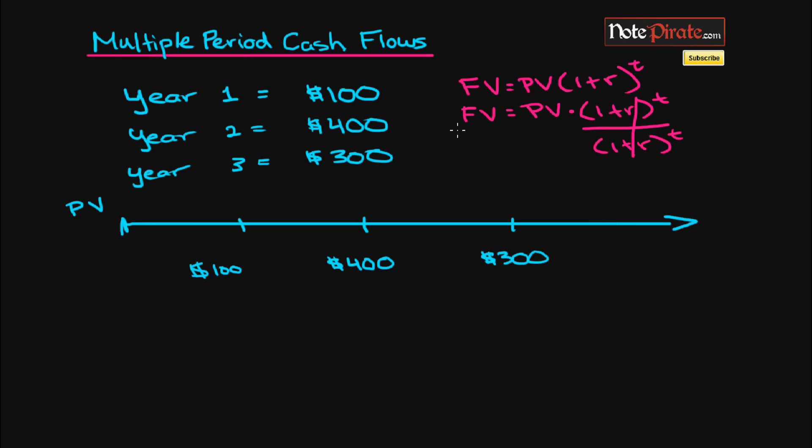That way this will cancel out, and we'll be left with—whatever we do on the right side we have to do to the left side. So our equation will look like: present value equals future value divided by (1 + r) to the power of t. In case you're not familiar with manipulating equations, the opposite of multiplication is division, which is why we divided to get rid of the right side. The actual equation will look like this now: PV = FV / (1 + r)^t.